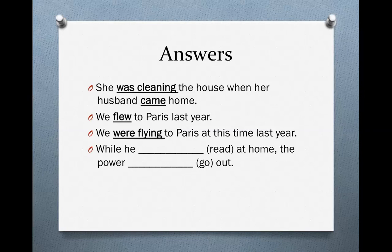Next: 'We flew to Paris last year,' as opposed to 'We were flying to Paris at this time last year.' Why do we use simple past in the first sentence and past progressive in the second? Notice the phrase 'at this time.' The simple past is used when we know the time, but with a very specific point in time we often use the past progressive, because the simple past is for actions that began and ended in the past. Last year we began and ended our flight to Paris, but at this specific time last year we were in the middle of that flight — it wasn't beginning and it wasn't ending, it was somewhere in the middle. So we use the past progressive.